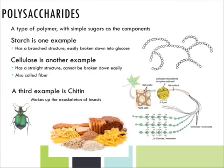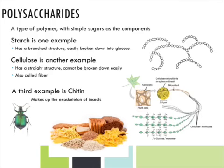Another example, just for fun, is something called chitin. Chitin is a polysaccharide that makes up the exoskeleton of insects. So if you were to eat an insect, you would be getting this polysaccharide as you crunched into its exoskeleton.